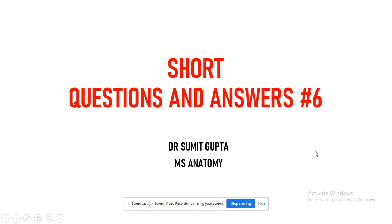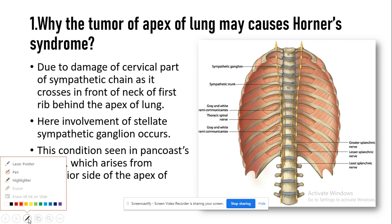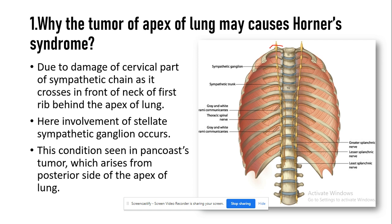Hello students, today we will discuss the short question answer part six. The first question is: why may a tumor of the apex of the lung cause Horner syndrome? When you see this diagram, you will realize this is the important area to understand. The relation of the apex of the lung is key — the most important area is present behind the posterior part of the apex of the lung.